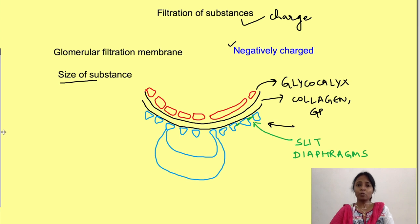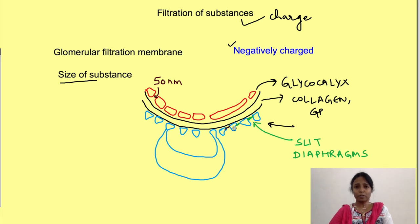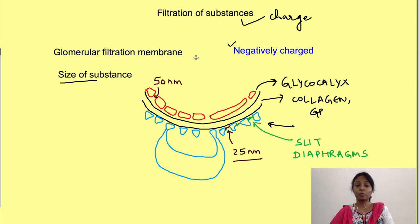The space between endothelial cells — called fenestrations — is quite large, around 50 nanometers, allowing a lot of plasma to filter. The space between foot processes is around 25 nanometers. You might think substances less than 25 nanometers in size will filter freely.